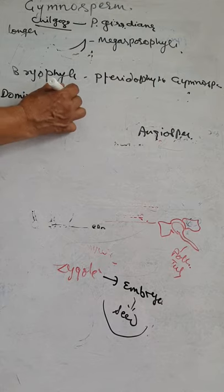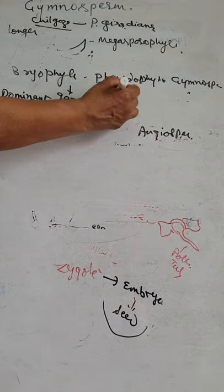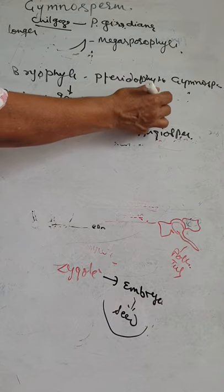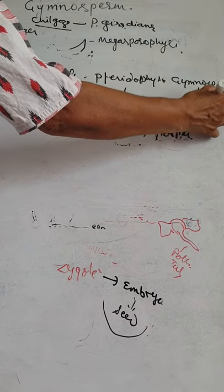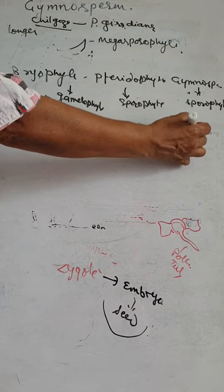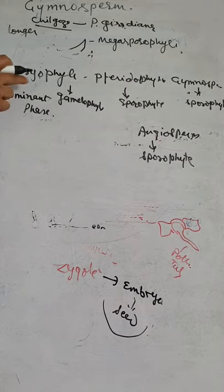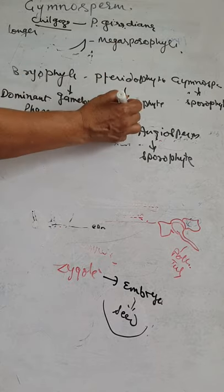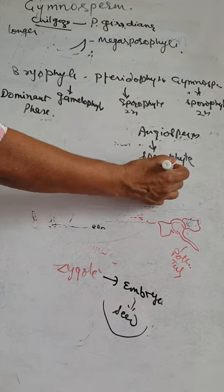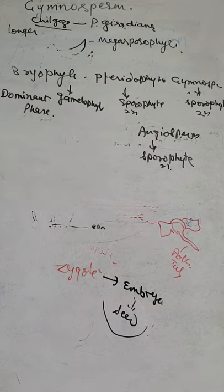In bryophytes the dominant phase is the gametophyte. In pteridophytes it changes — the sporophyte is dominant. In gymnosperms and angiosperms also, the sporophytic phase is the dominant diploid phase. The angiosperm, the flowering plant, will be discussed in the next lecture.